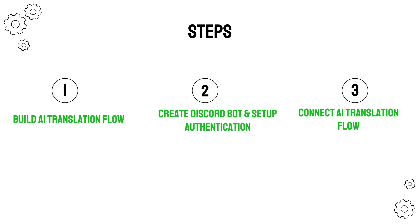There are three main steps to build this language bot. First, we're going to build two flows in FlowWise for AI translation services — one flow to translate from Portuguese to English and the other from English to Portuguese. The next step is to create the Discord bot and set up authentication. Lastly, we're going to connect the Discord bot with the AI translation services.